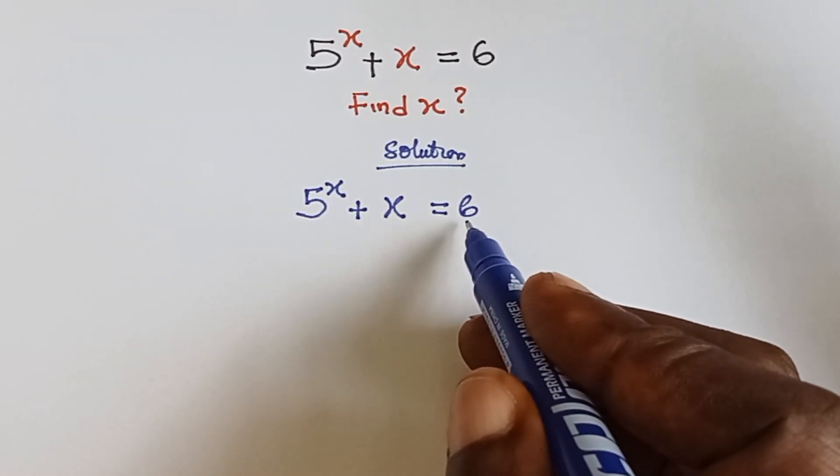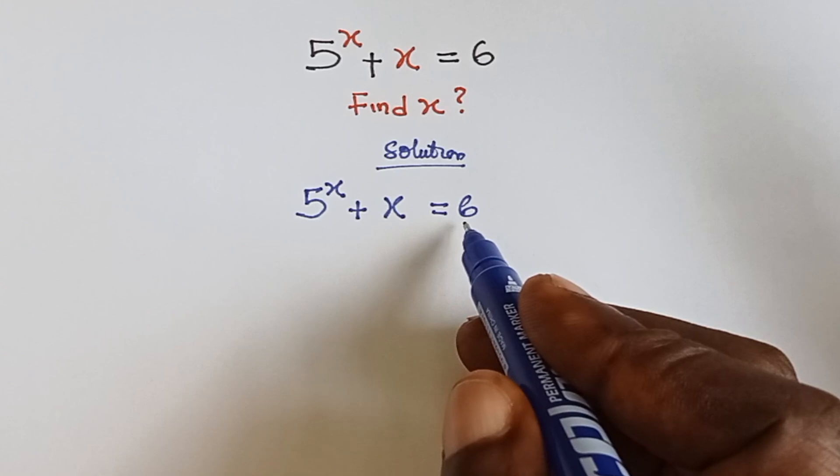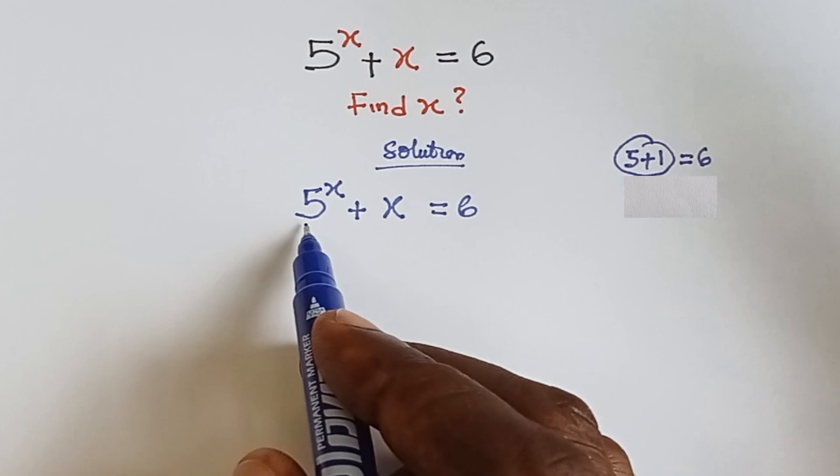So what we do is we are going to split this 6 into 2, and then one of the numbers must be a multiple of 5 because we have 5 raised to a power here.